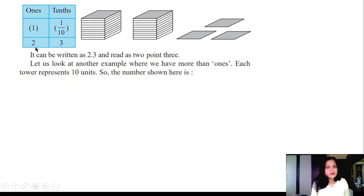In ones place it is 2 and in the tenths place it is 3. This is not 23. In ones place it is 2, and where the tenths comes you have to put the point here: 2.3 is read as two point three.